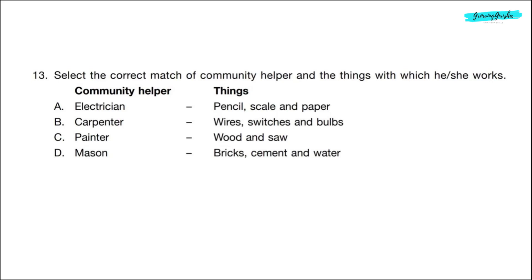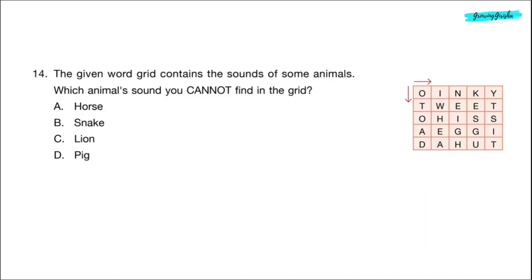Option C, painter. Painter uses pencil, scale and paper. It is also incorrectly matched. Option D, mason. He uses bricks, cement and water. Correct answer is option D.